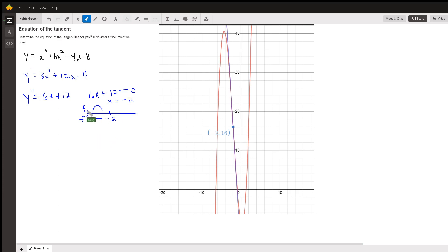And to the right of negative 2, y double prime is positive. That tells you that tangent lines are increasing in slope, which means that the curve is concave upward to the right of negative 2. So indeed, at negative 2, we have a point of inflection.